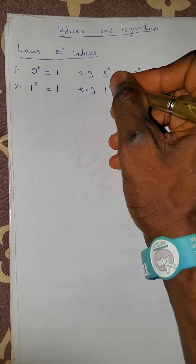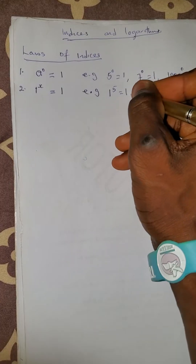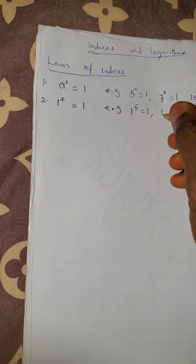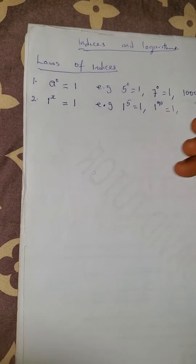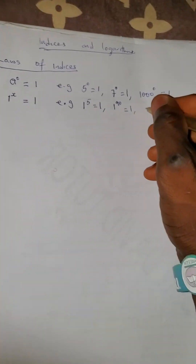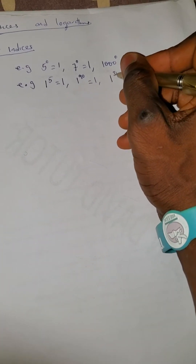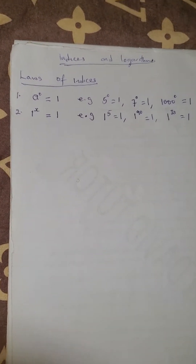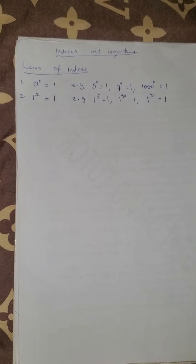For example, if you have 1 raised to the power 5, it should still equal 1. If you have 1 raised to the power 90, it's still equals to 1. If you have 1 raised to the power 35, it's still equals to 1.